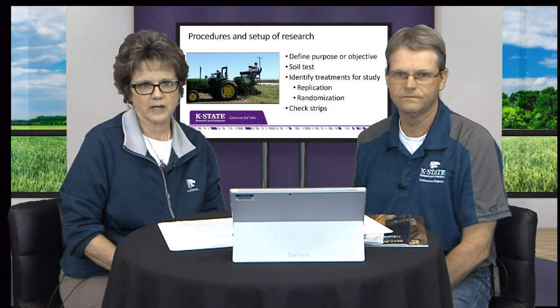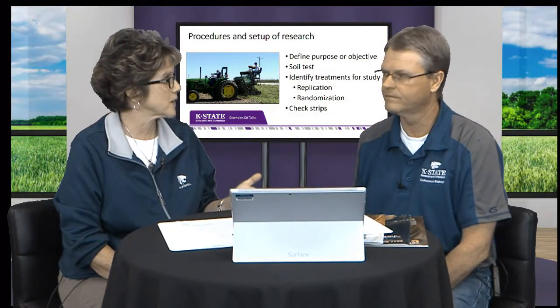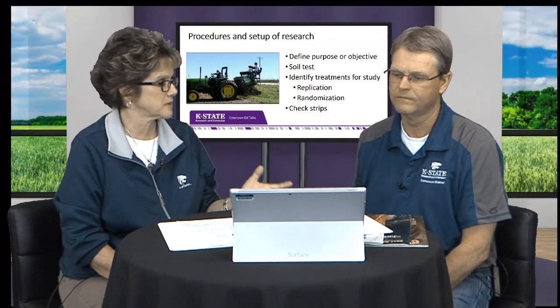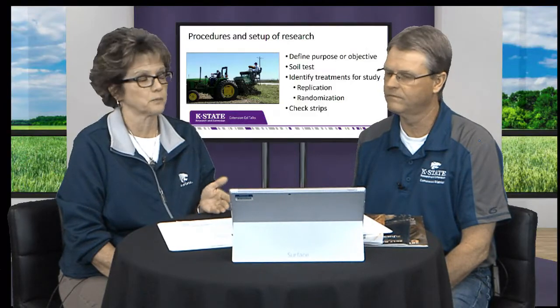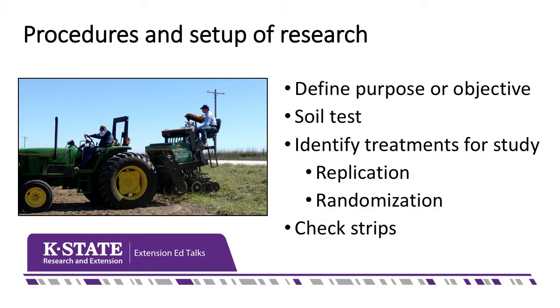Let's look at the procedures and how we go about setting up on-farm research, whether it be on-farm research or a demonstration test plot. The first point is to clearly define your purpose or objective — what we hope to accomplish with the research. It could be as simple as comparing conventional tillage to no-tillage, or clearly comparing variety A with variety B.